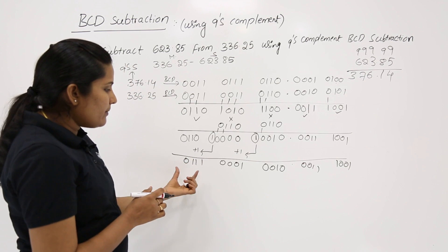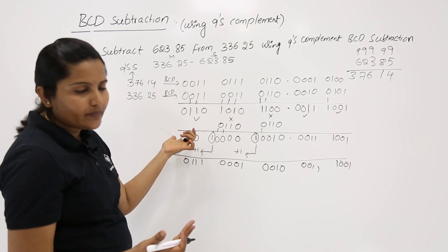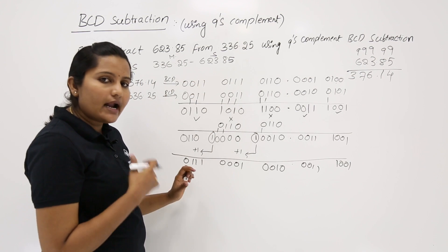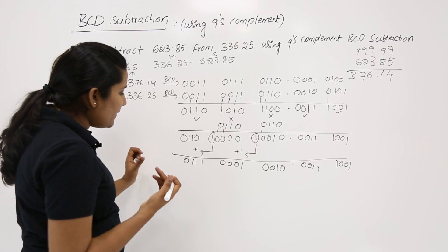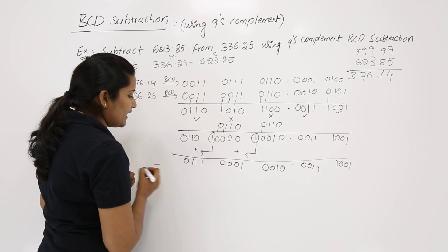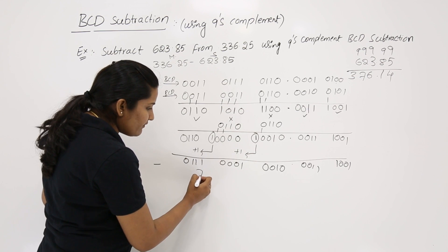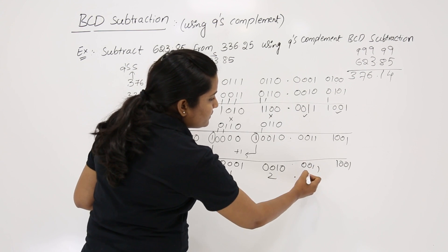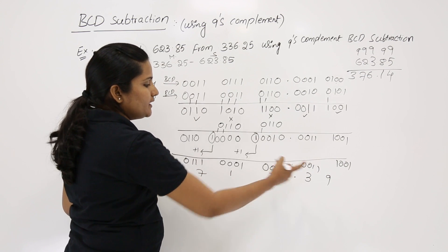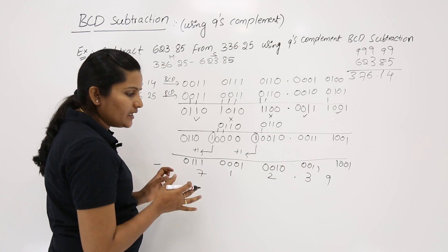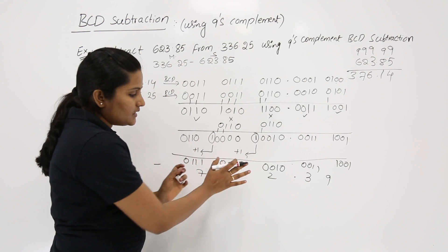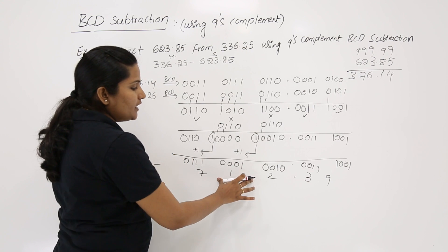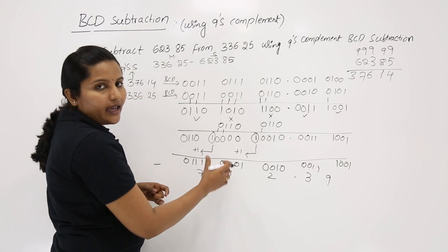There is no end-around carry. If there is no end-around carry at the end, then the result is said to be negative and is in 9's complement form. This result is 712.39, but this is the complemented form, not the actual result.